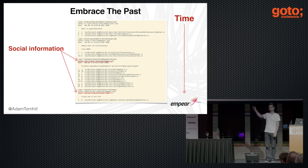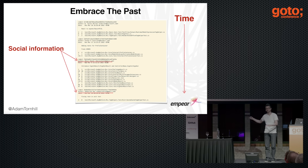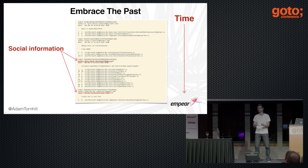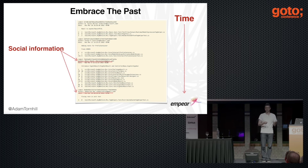I've come to view our version control history as a behavioral log of how we as developers have interacted with our code base. You see an example here from Git. If we look at that log, we see a timeline because the commits are ordered in time. And we also get social information because we know precisely which developer did what change at what point in time. So let's embrace the past and see how it helps us.